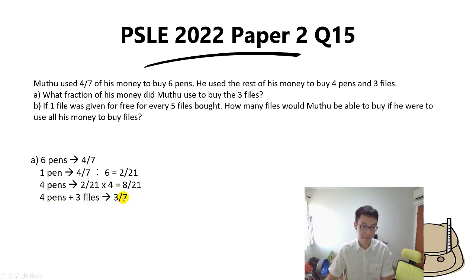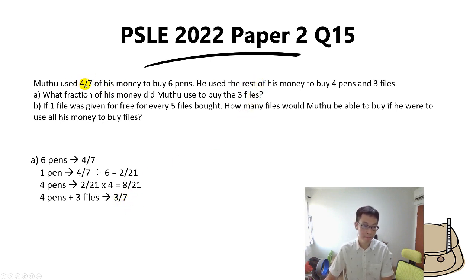We know that four pens and three files together cost 3/7 of his money. Why 3/7? Because the rest of his money is 1 whole minus 4/7, which gives 3/7.